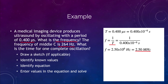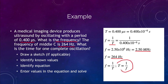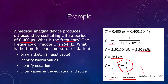We can also work the problem in reverse. If middle C has a frequency of 264 hertz, what is the period — the time to complete one oscillation? Since frequency equals one over the period, we invert to get period equals one over frequency. Putting in the numbers: one over 264 hertz, which gives 3.79 times 10 to the negative third seconds, or 3.79 milliseconds for the period of middle C.